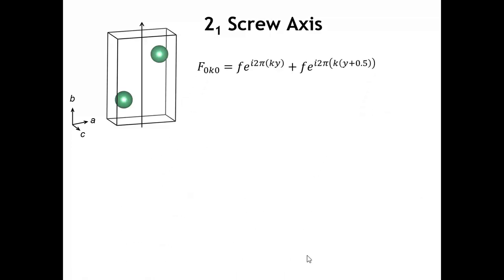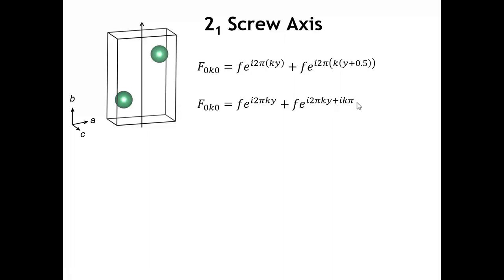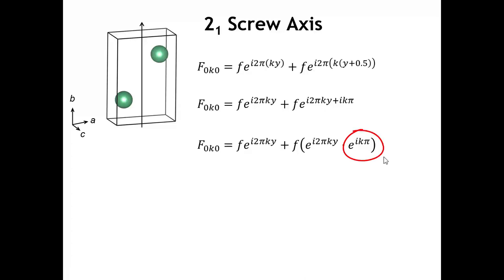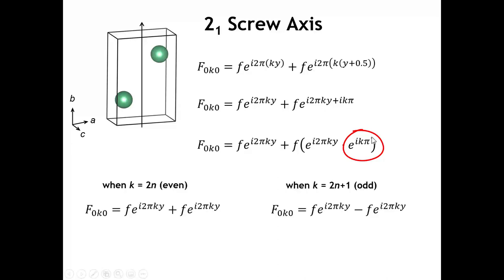We can further simplify by carrying through the multiplication in the exponential of the second term. We get the form factor — both atoms must be the same because they're related by the 2 sub 1 screw — times e to the i 2π k y. The second term gives the form factor times e to the i 2π k y times e to the i k π. Using the property that e to the (a+b) equals e to the a times e to the b, when k is even, the last term e to the i k π reduces to 1, and the structure factor becomes the sum of two identical terms.